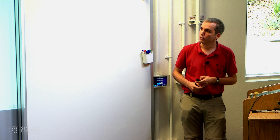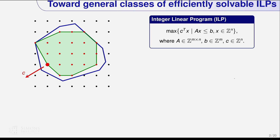Let's start from the very basics. It's just a standard integer program with objective C, constraint matrix A, right-hand side B, and all of them are assumed to be integer. In the diagram to the left, you see the linear programming relaxation — the blue set — and we optimize not over the blue set but only the integer points in there, so those are the red dots. The green set is the convex hull of the integer points, which we call the integer hull.